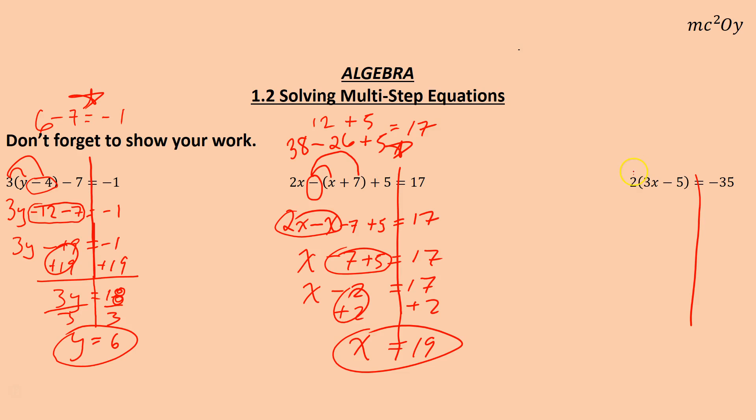And the last one. Go ahead and distribute this. I put this one in here because now we see a 2 times a 3x. Well, 2 times 3x, that just means you multiply the number. That gives you 6x. If you have two 3x's, that's 3x plus 3x or 6x. And 2 negative 5 is negative 10.